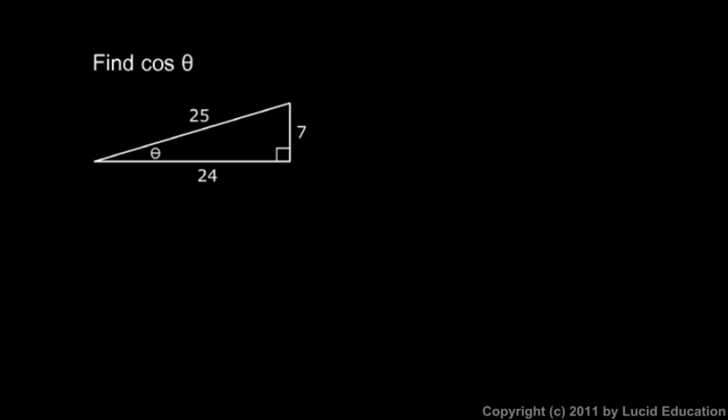Let's look at a quick example. We're told to find the cosine of theta and we're given some numbers. This is a right triangle. Here's angle theta. So the cosine of theta will be the adjacent side, which is right here.